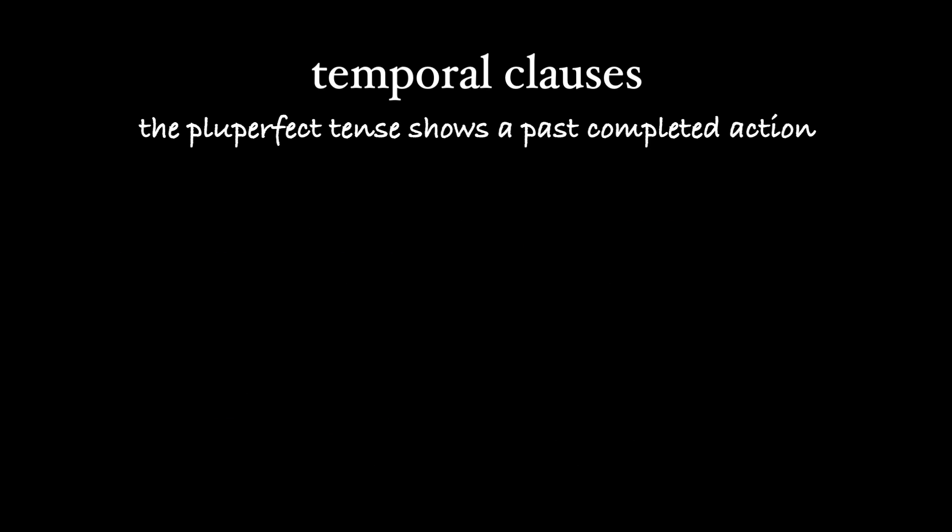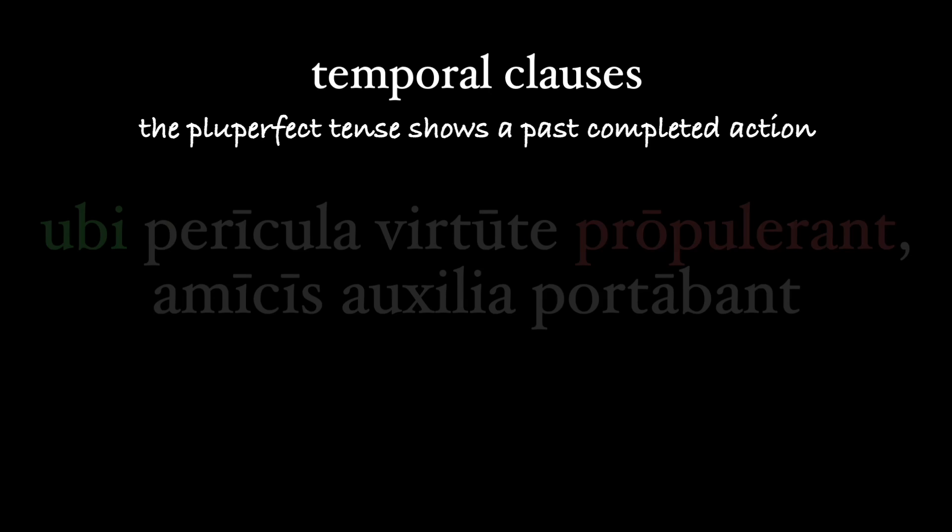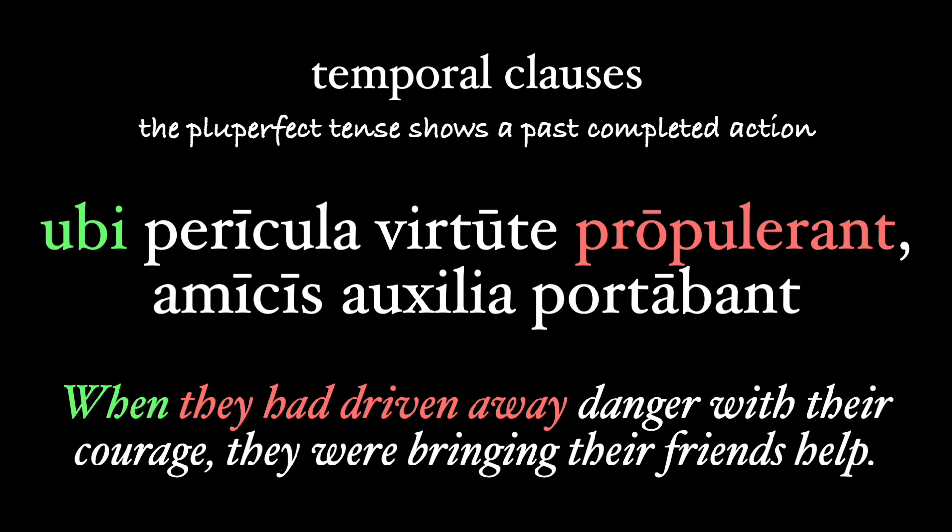The pluperfect tense, on the other hand, is used to show a past-completed action, as it typically does. Ubi pericula virtute propulerant, amicis auxilia portabant — 'when they had driven away danger with their courage, they were bringing their friends help.' Our pluperfect propulerant shows an action already completed by the time they brought help to their friends.